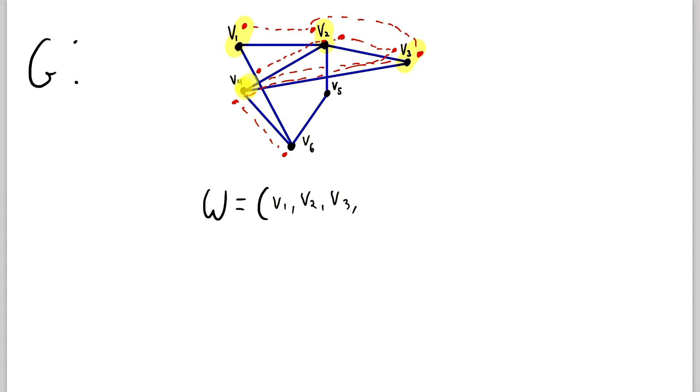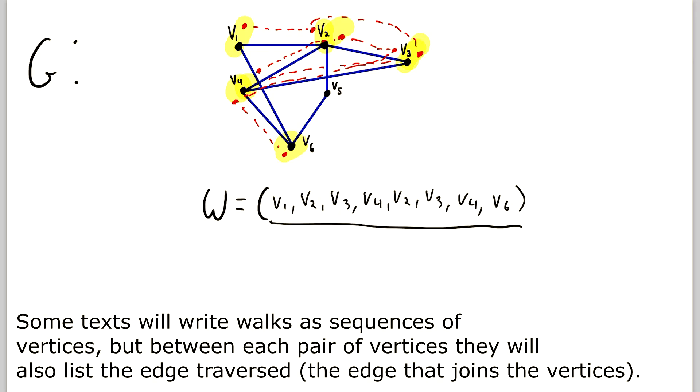Then we went to V4, then we went back to V2 again, then we went back to V3 again, then we went back to V4 again. So we went to V4, back to V2, back to V3, back to V4, and then lastly we went down here to V6. So that's where our walk ended and we closed the parentheses. So this describes our walk in G.